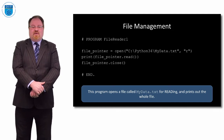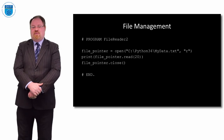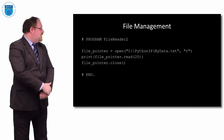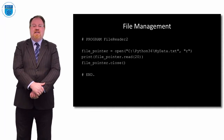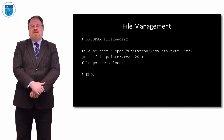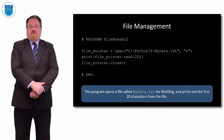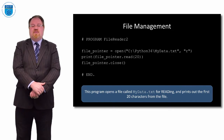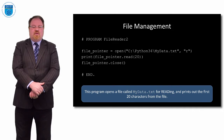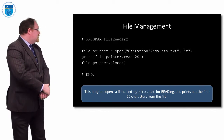Let's look at a different program where we specify the number of characters we're going to read. It's the exact same setup — we open the file pointer for read — but this time we put a parameter into read: we say 20. What that means is we just read the first 20 characters of the file. The program will open mydata.txt for reading and print out just the first 20 characters, then we close the file.